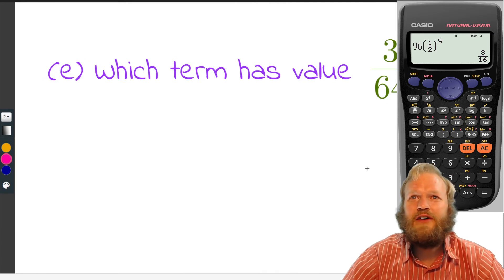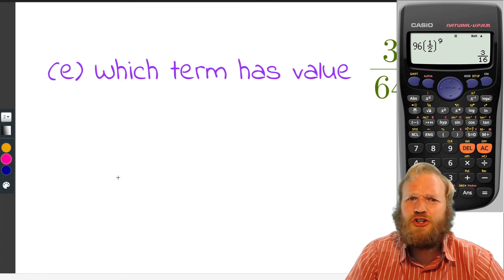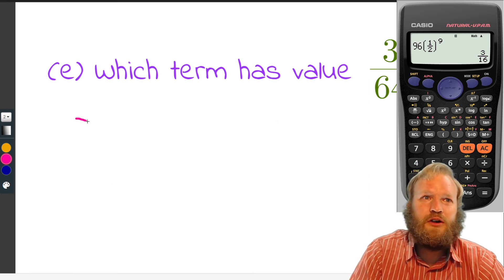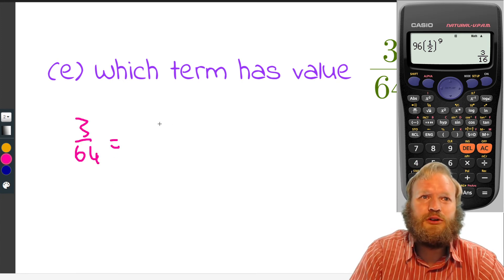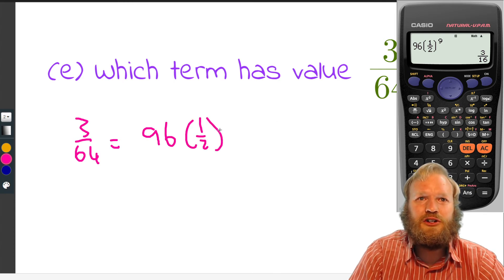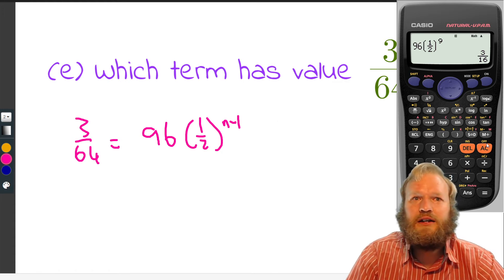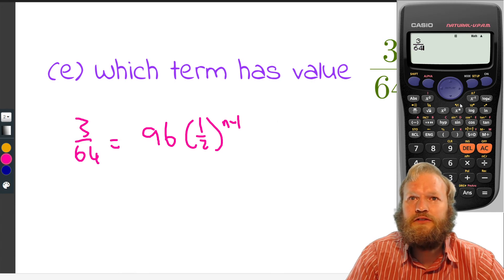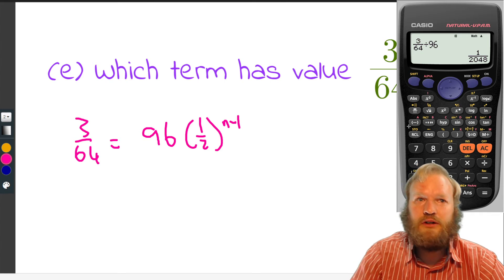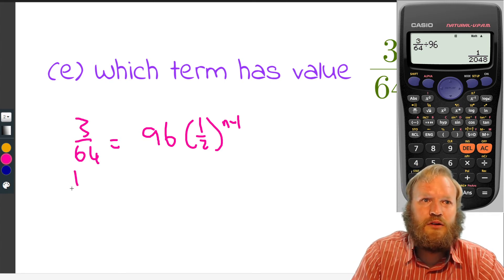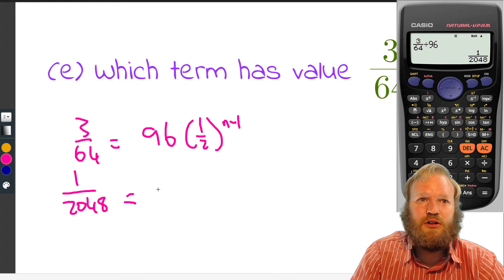Which term has the value three over 64? Okay. Which term does have that value? Three over 64 equals A, what did we say? A was AR to the N minus one. Okay. So cool. So we divide both sides by 96. So we got three over 64 and we divide by 96. Okay. That's looking good so far.